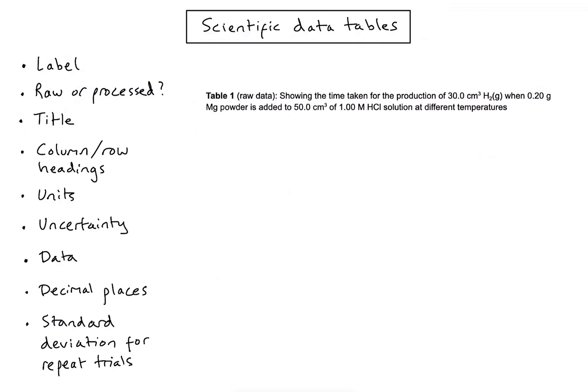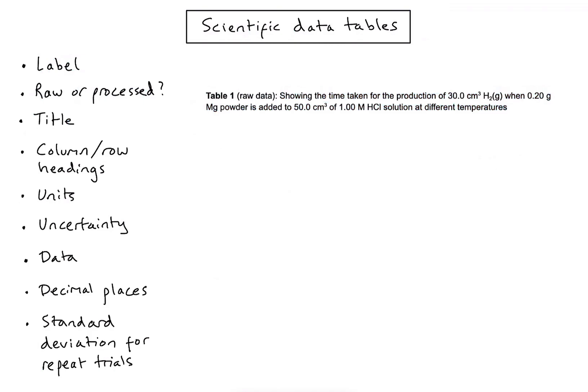The actual title itself should contain lots of detail. You should really be able to give this to another student and they should have a pretty good indication of what to expect in the table without even seeing the data. So I've specified what I'm measuring — how much gas is being produced — and what I did to start the chemical reaction. Don't worry if it looks a bit wordy; it's better to be too focused than too vague.